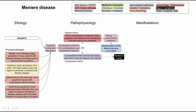Autoimmune etiologies also have some evidence. It's possible there's an autoimmune process in the inner ear, since symptoms tend to improve with intratympanic steroid therapy. Steroids are largely anti-inflammatory, so if there's an autoimmune process, it might improve with steroid therapy. On a systemic level, antiphospholipid antibodies have been found in patients with Meniere's disease, suggesting a possible thrombotic event in the labyrinthine circulation of the inner ear.